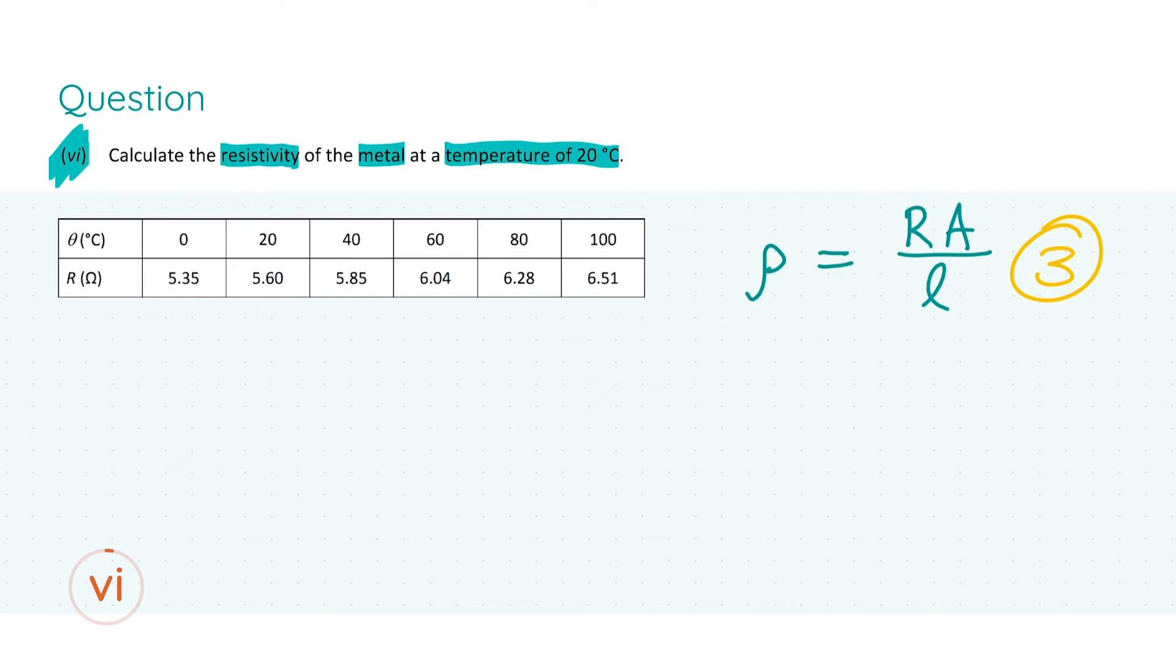We need to find the resistance R, the cross-sectional area A of the wire, and the length of the wire. First, the metal is at temperature equal to 20 degrees Celsius. Looking at the table of values, we know that at 20 degrees Celsius, that equates to a resistance of 5.6 ohms. So we have the resistance. Moving on to the length, we're told the length of the wire is 30 centimeters, or if you convert it into SI units from centimeters to meters, that's 0.3 meters.